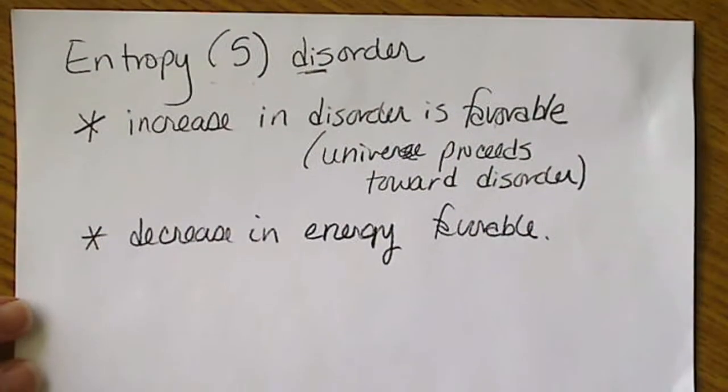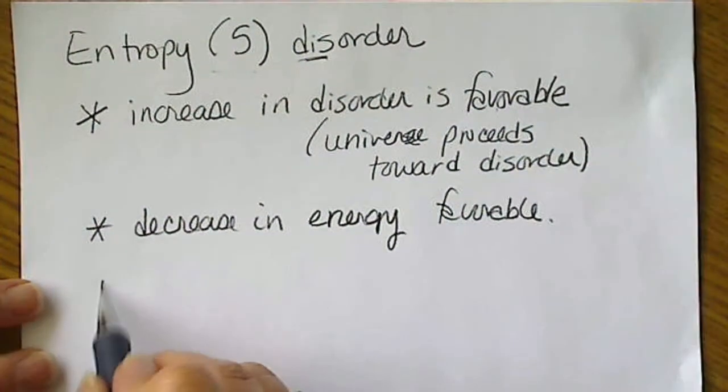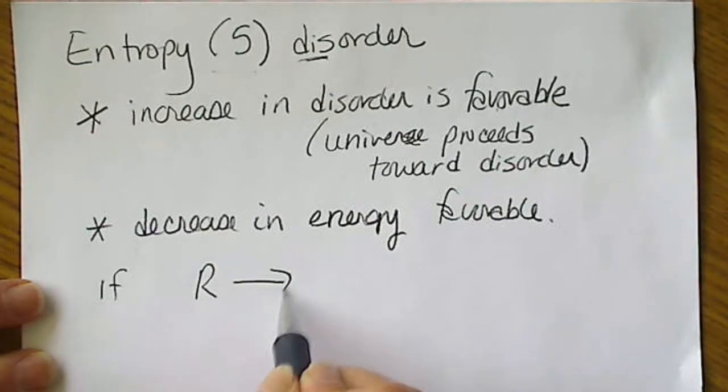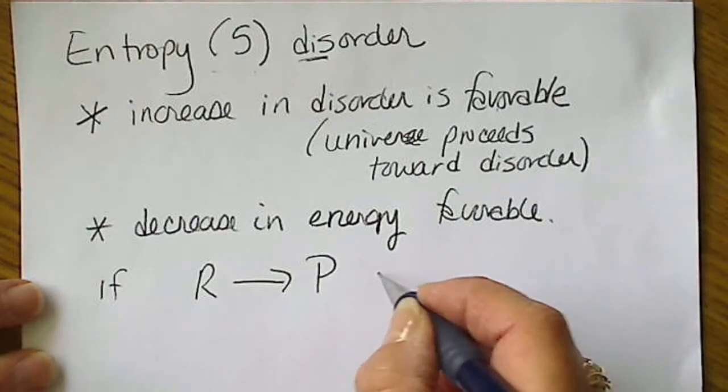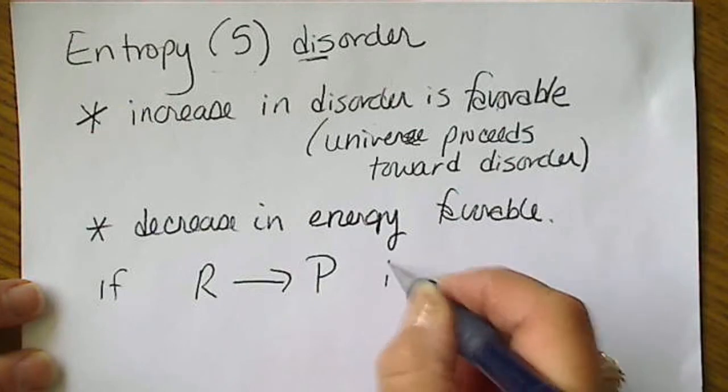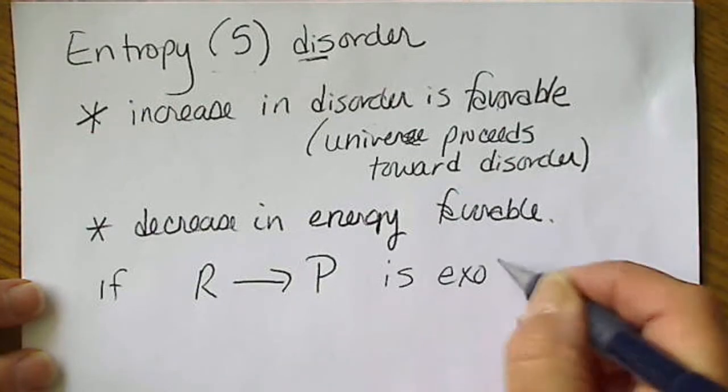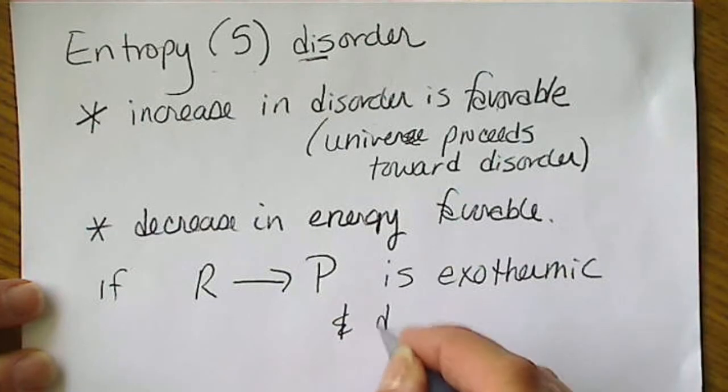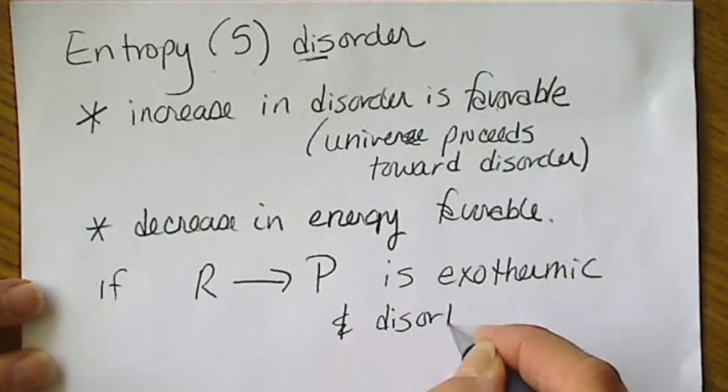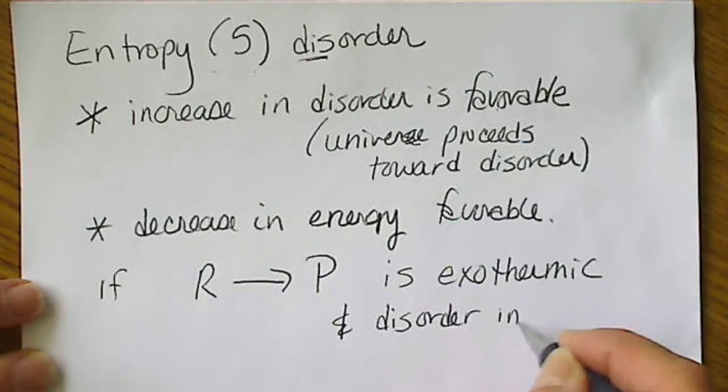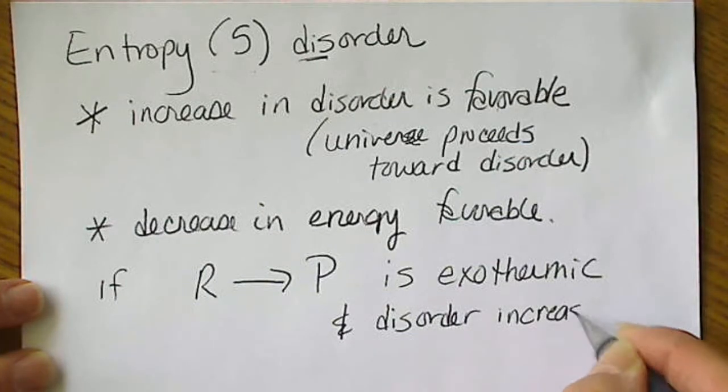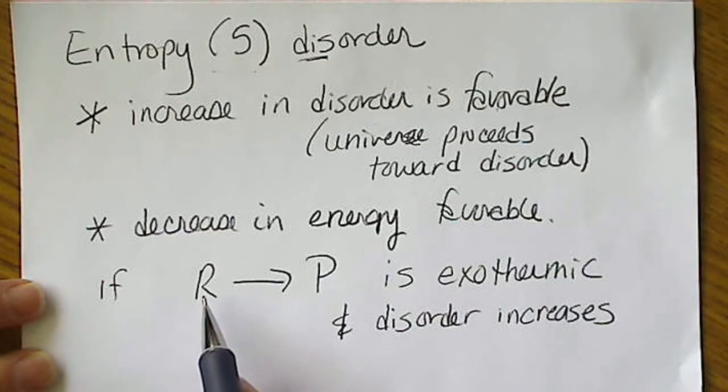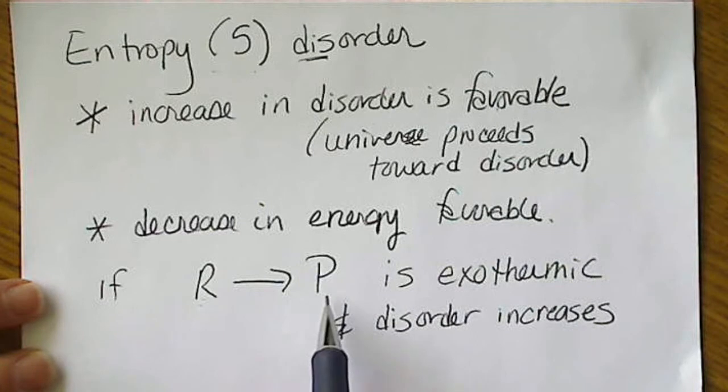And a decrease in energy is also favorable. So we're going to see that if we have a reaction, so if we go from reactants to products, if this is exothermic and the disorder increases, that means this reaction is always going to proceed to the right. In other words, the way it's written, reactants will always proceed toward products spontaneously.